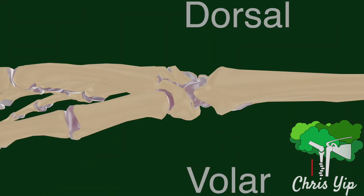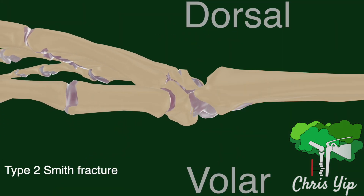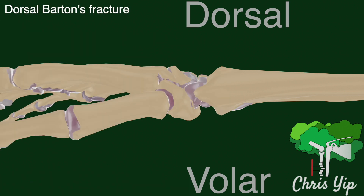A type 2 Smith fracture is an intra-articular fracture with a volar displacement of the fragment and carpus. This is also known as a volar Barton's fracture.